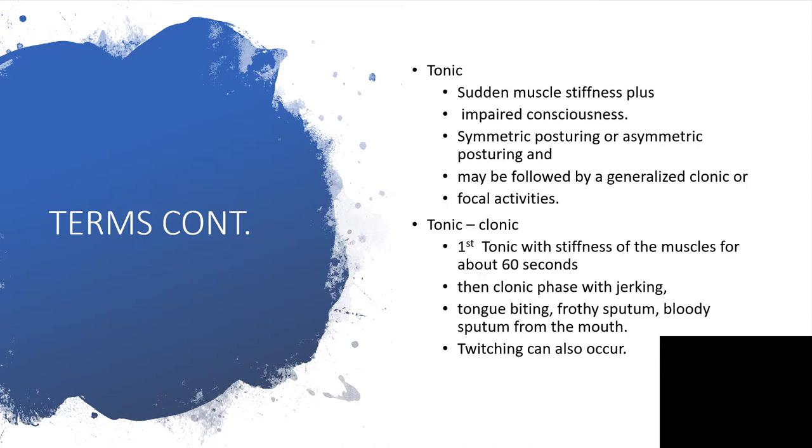Tonic. Tonic, on the other hand, will involve muscle stiffness. The muscle will just become very stiff with impaired consciousness. Most of the time that will be symmetrical posturing and could be asymmetrical posturing as well. Might be followed by generalized clonic or just have a focal activities.